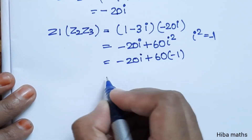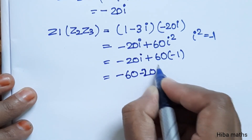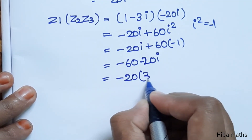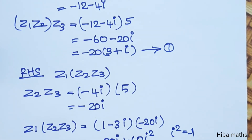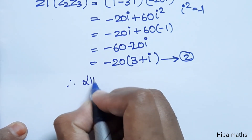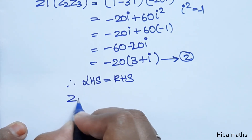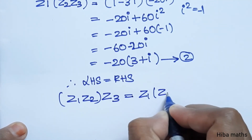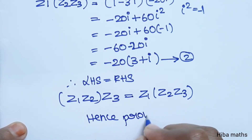So we have minus 60 minus 20i. Taking minus 20 common: minus 20 into 3 plus i. This is the second result. First result equals second result. Therefore LHS is equal to RHS, and z1 into z2 into z3 is equal to z1 into z2 into z3. Hence proved.